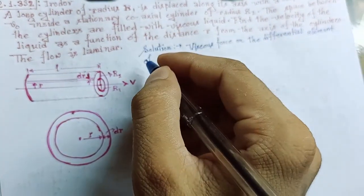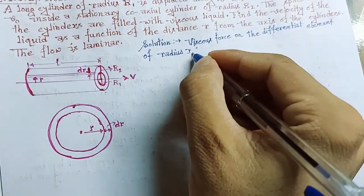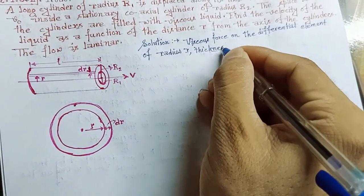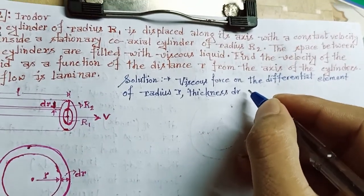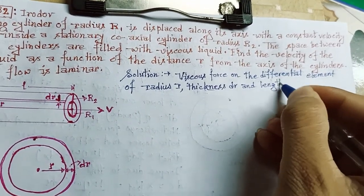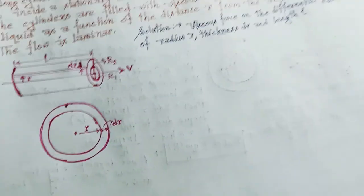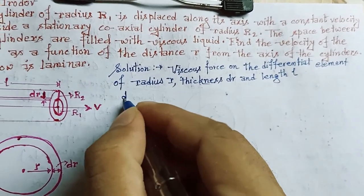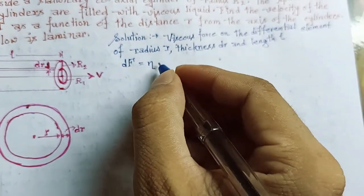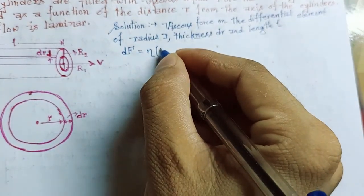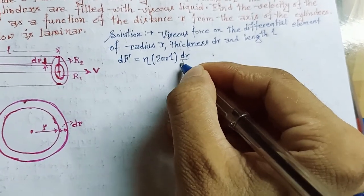The differential element has radius r, thickness dr, and length l. The viscous force is given by df equal to eta into area. The area of cross section of the cylinder equals 2πrl, so it becomes eta into 2πrl into velocity gradient, which means dv with respect to dr.